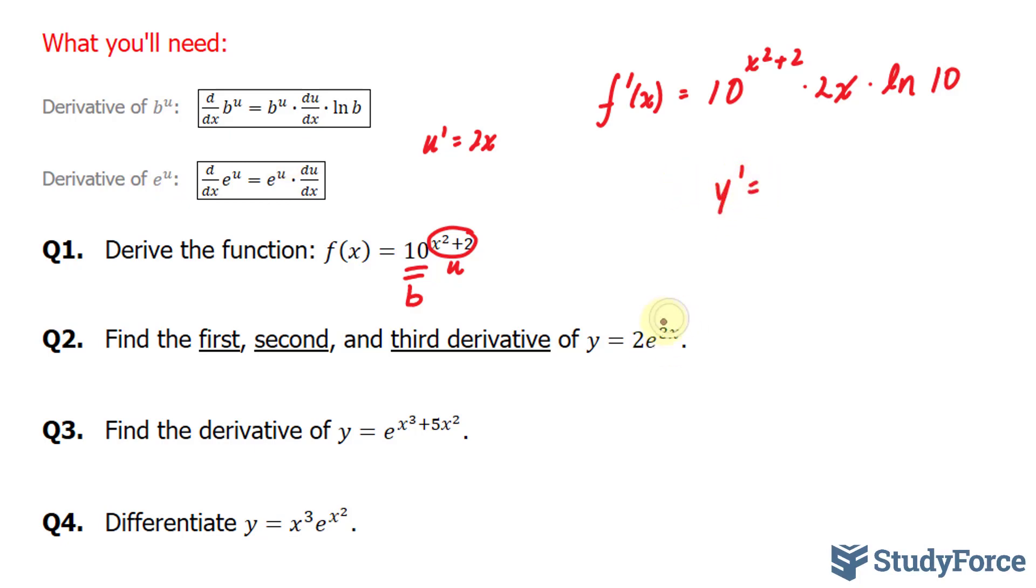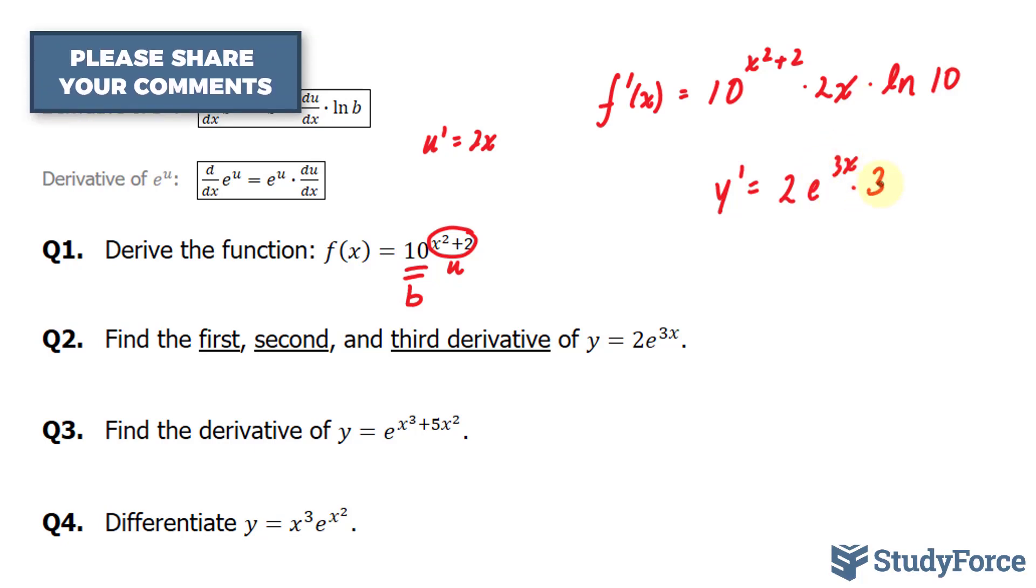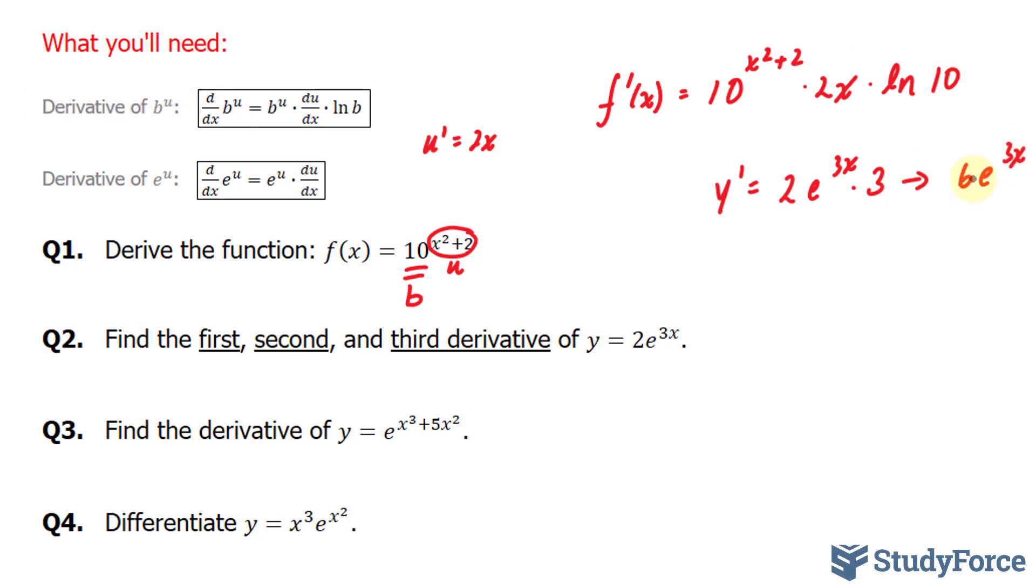y' is the derivative of this which is e^(3x). So we have 2e^(3x) and we take the derivative of 3x which is 3. That's the first derivative. That of course equals 6e^(3x).